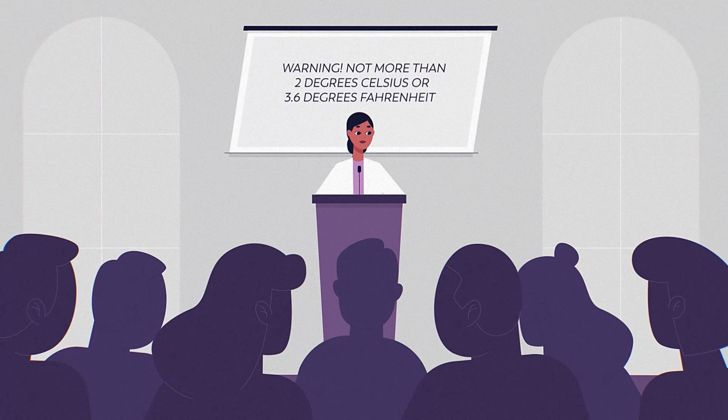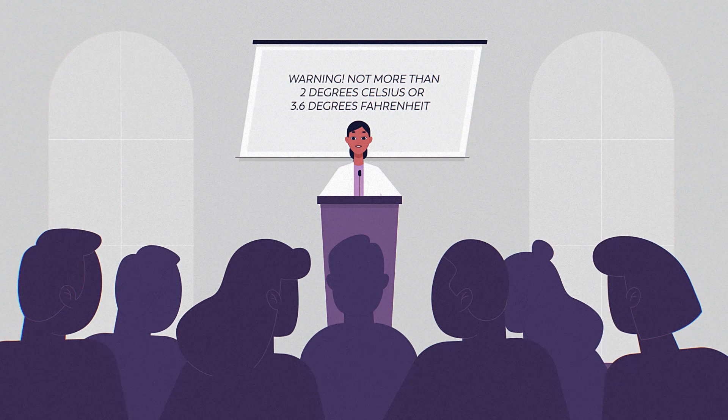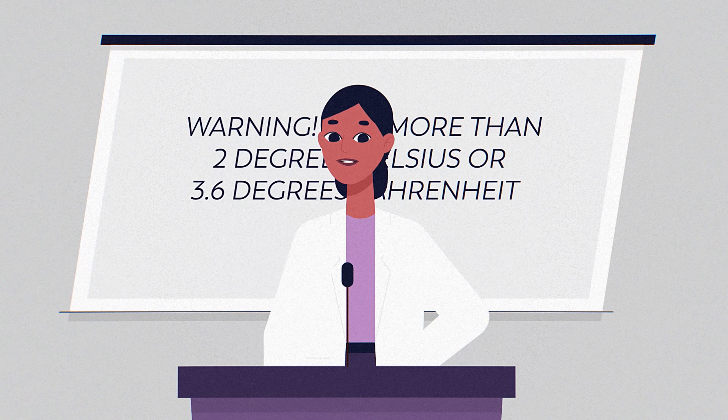In 2015, leaders from many countries adopted an international climate treaty known as the Paris Agreement to prevent global average temperatures from increasing to more than two degrees Celsius above the pre-industrial revolution temperature benchmark.